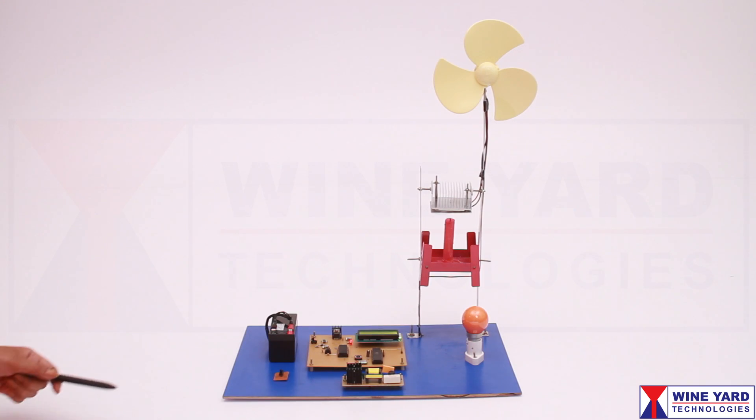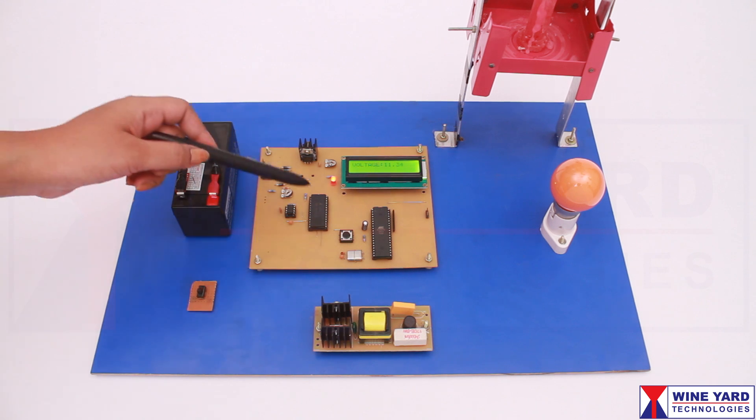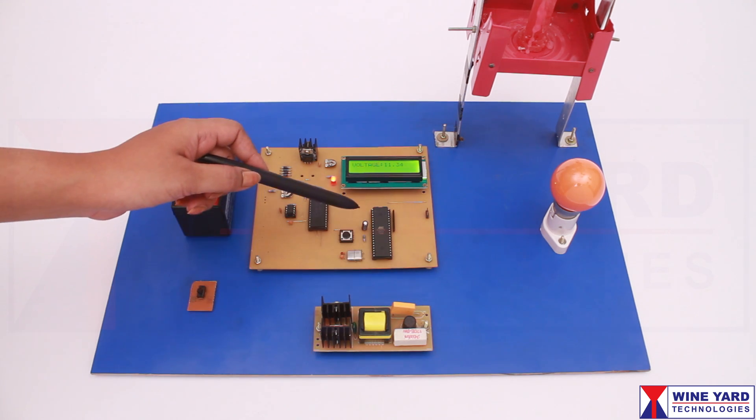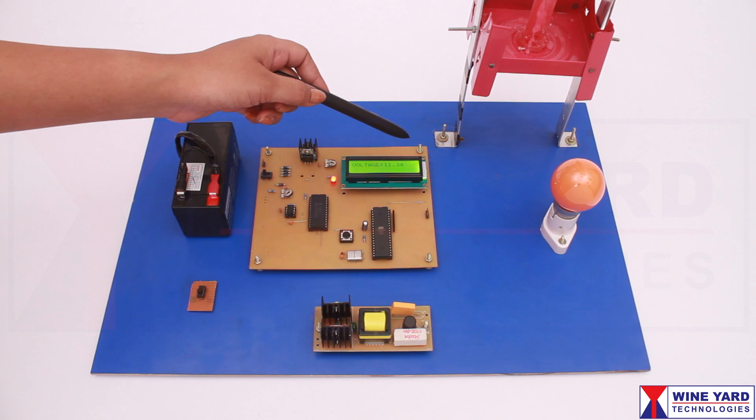You can charge this battery with the Seebeck generator. This ADC and microcontroller is used to monitor the battery voltage and display it on LCD.